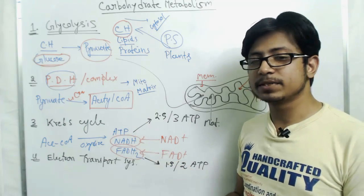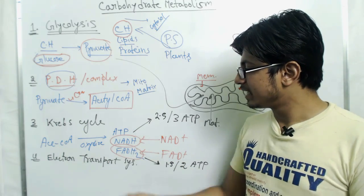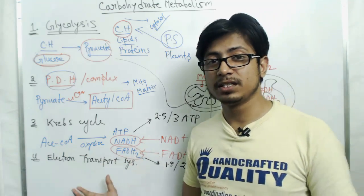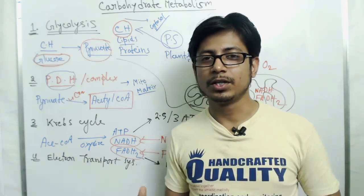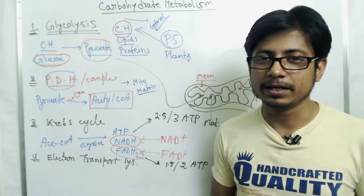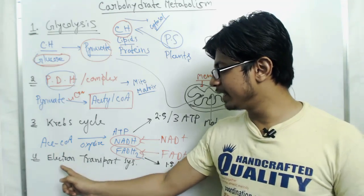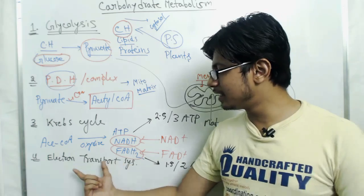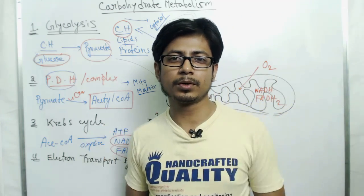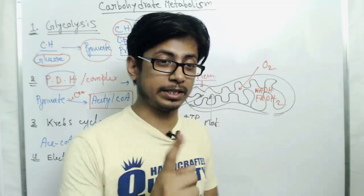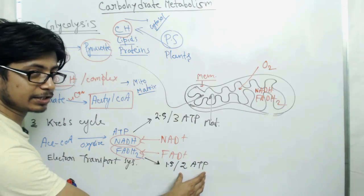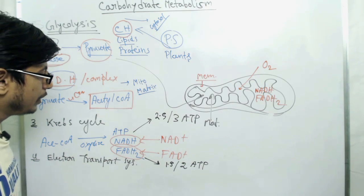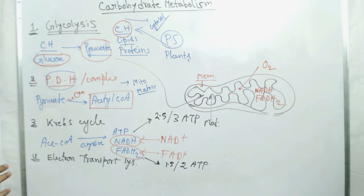Now in this part we're going to talk about the last important step of aerobic respiration, and that is the electron transport chain. This is the most important step because here we are going to generate energy as ATP molecules.